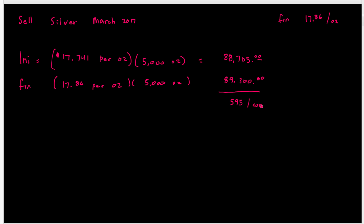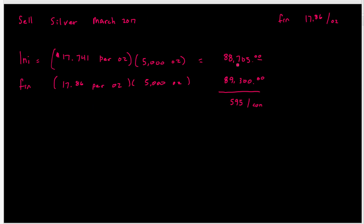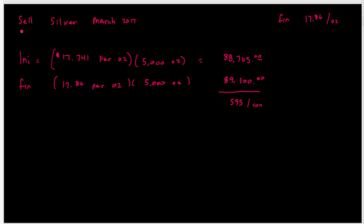Right off the bat we have a difference of $595 per contract. The problem says we sell seven of these contracts. Now is this a gain or a loss? In problems one and two we were buying — when the initial number was higher than the final we had a loss. But now we're selling, which changes things.